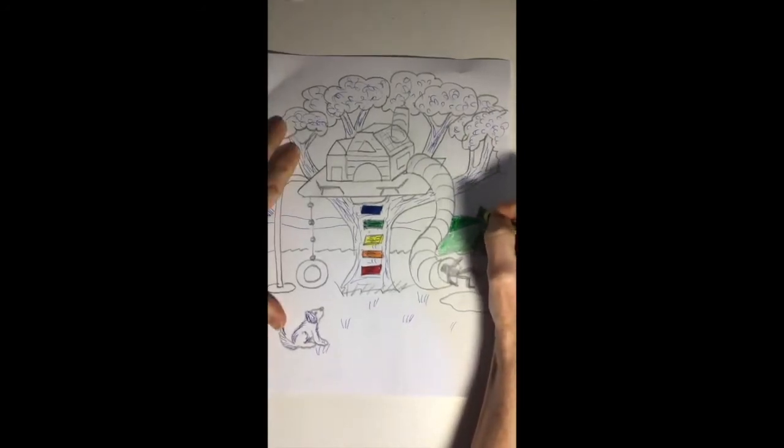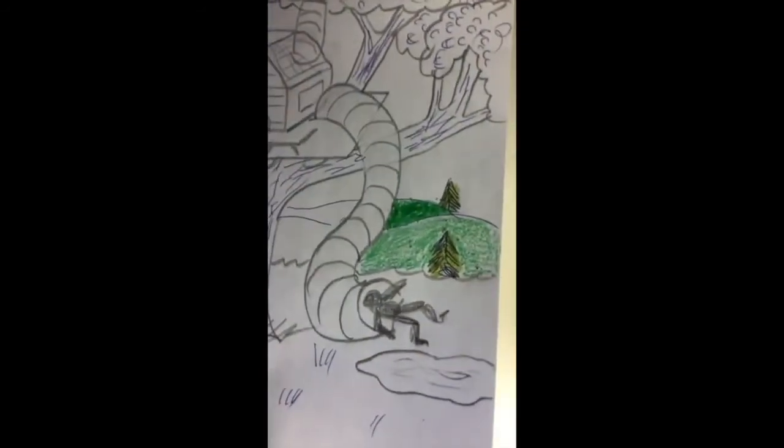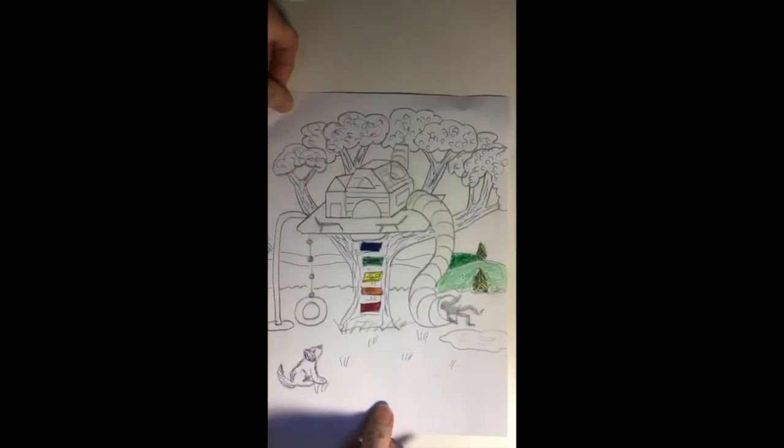I want to do those evergreen trees green also but because I want them to show up I'm going to try to find a different green to color them in so they don't all look like the same type of green.